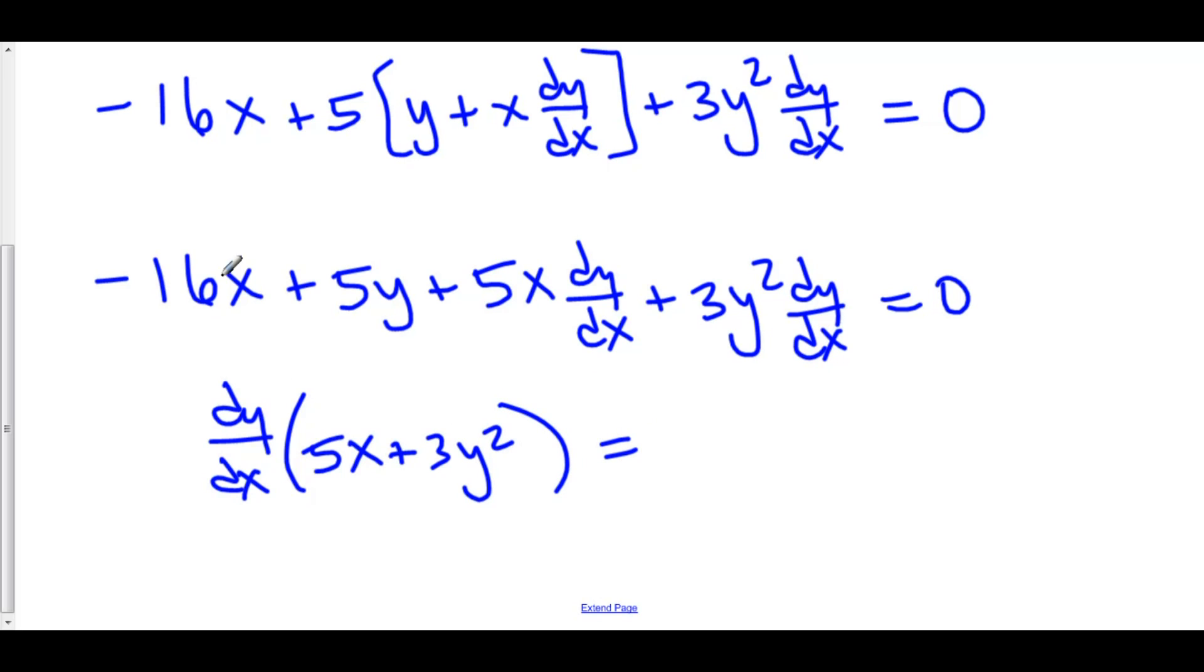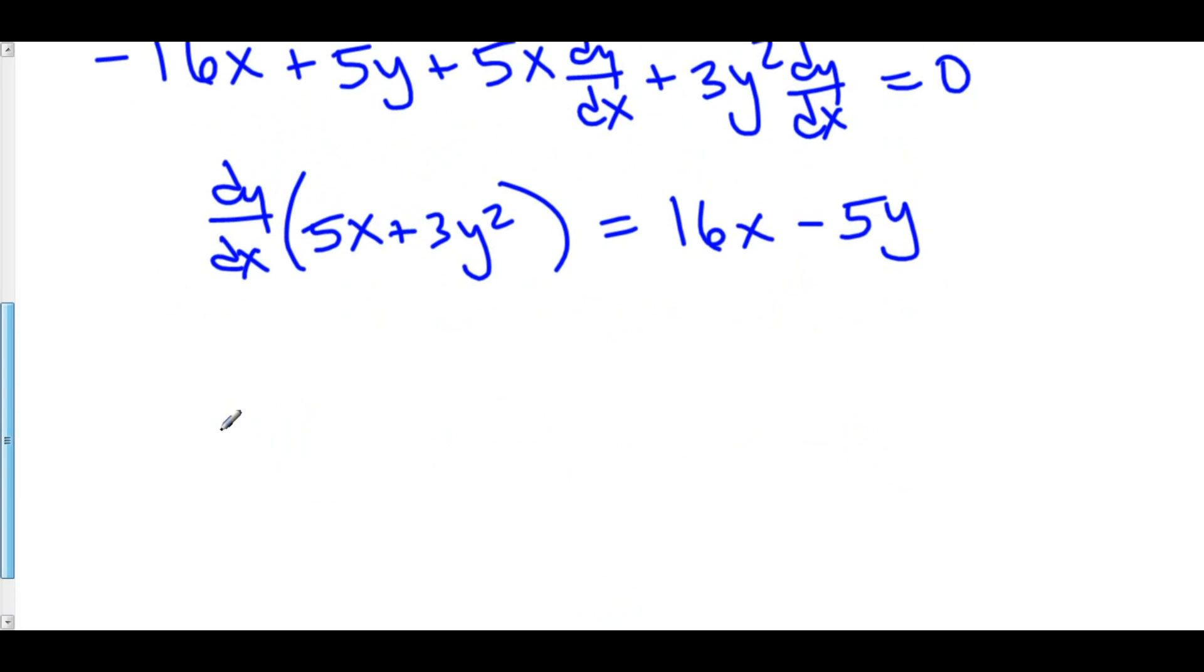We'll move over the negative 16x plus 5y yielding positive 16x minus 5y. And now we can divide everything by 5x plus 3y squared. So dy over dx is equal to 16x minus 5y over 5x plus 3y squared.